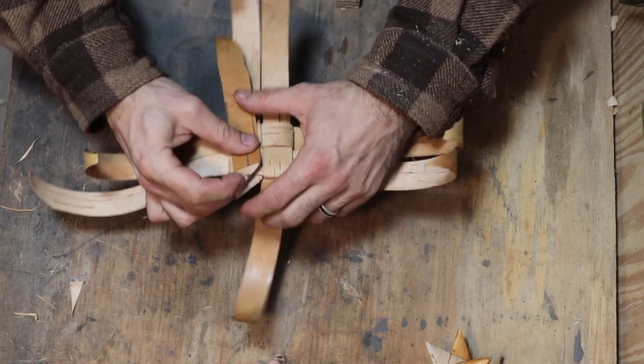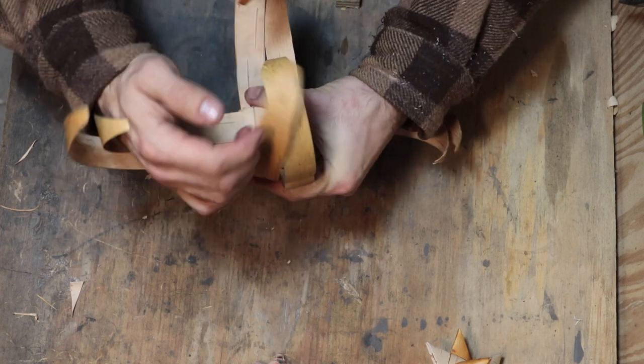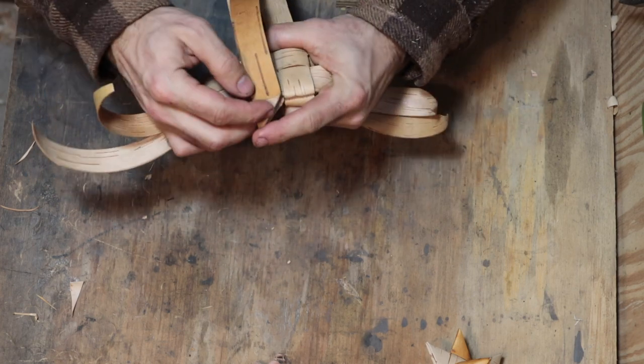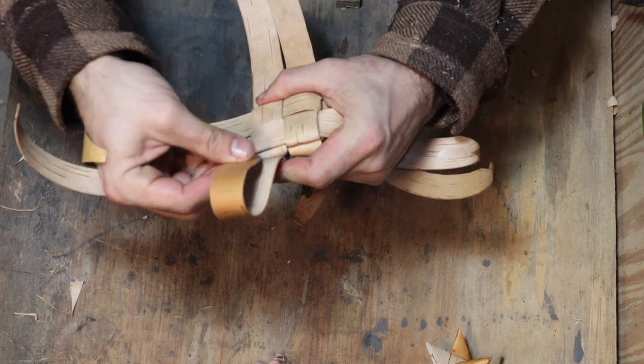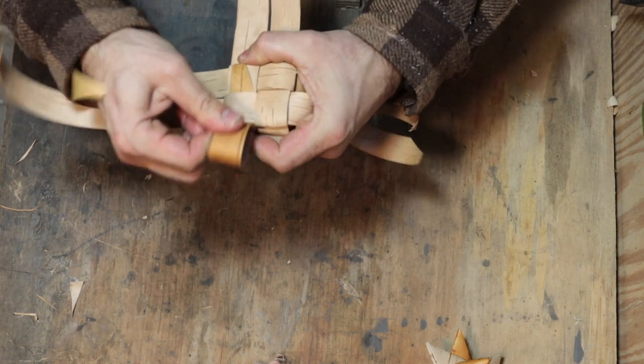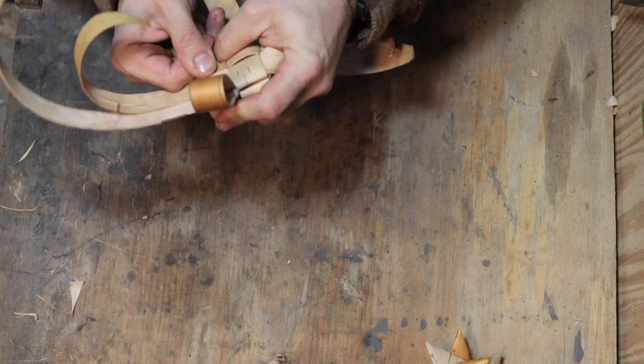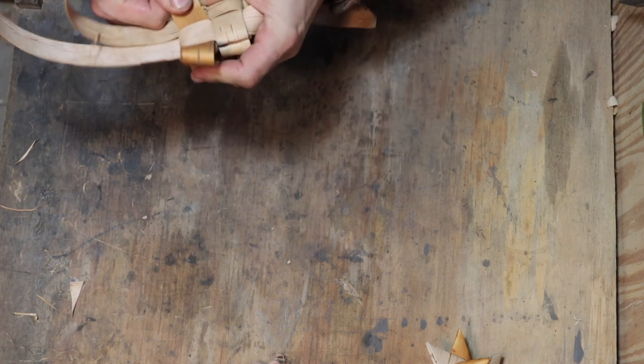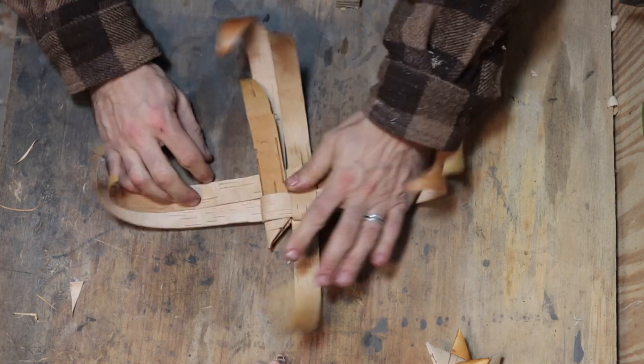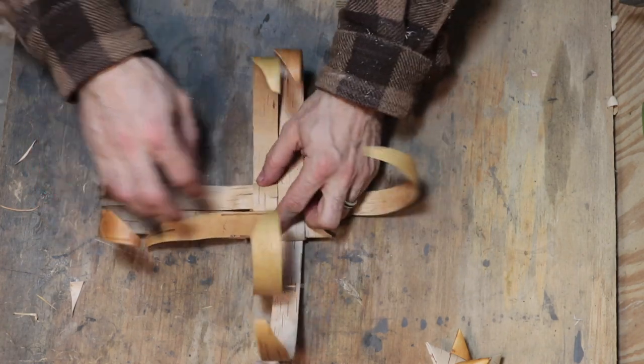Then we're going to take it, pick it up, I'm going to fold that triangle backwards and then tuck it under itself there. Still holding the triangle back as we pull through. Then rotate 90 degrees and repeat.